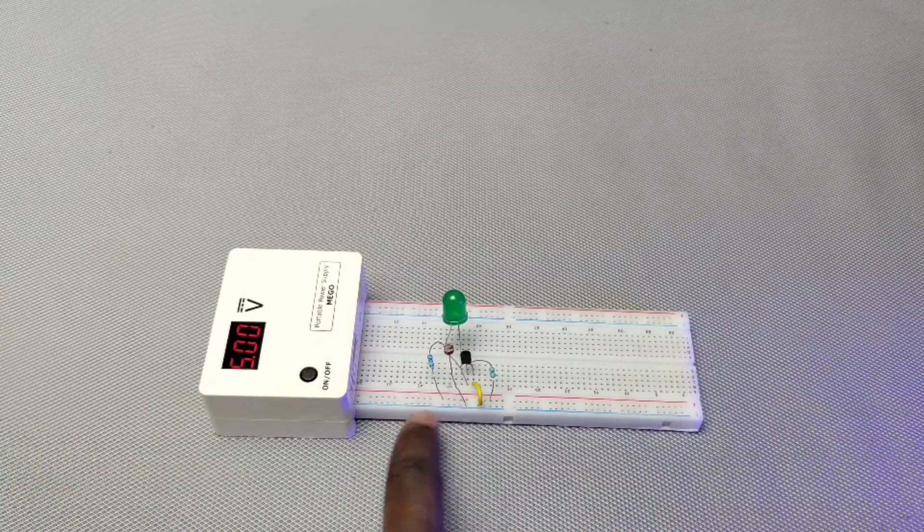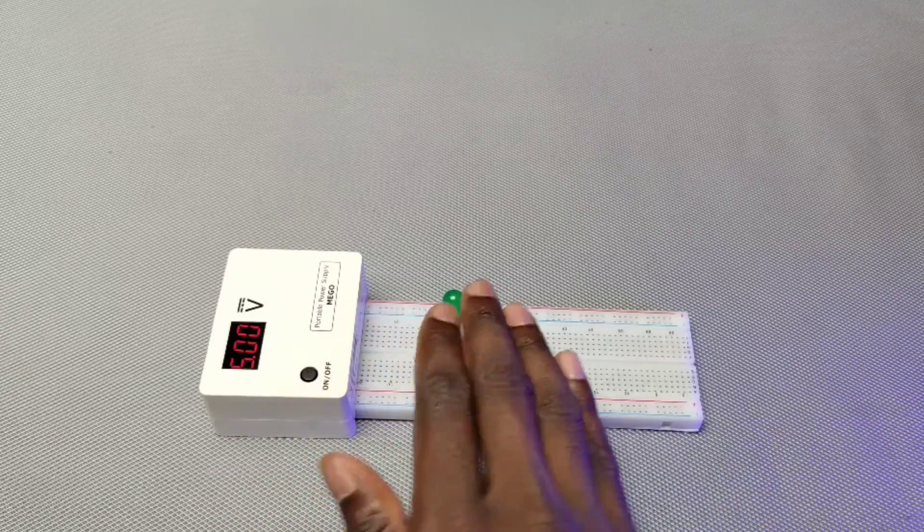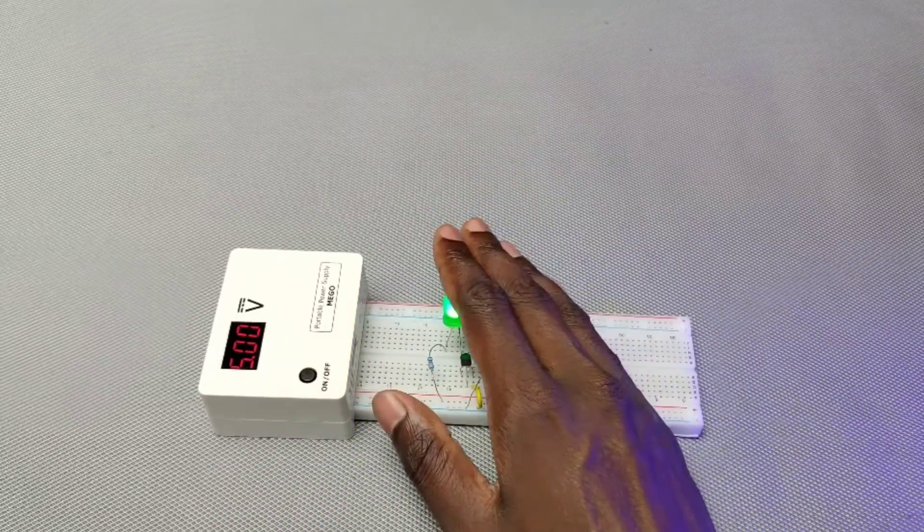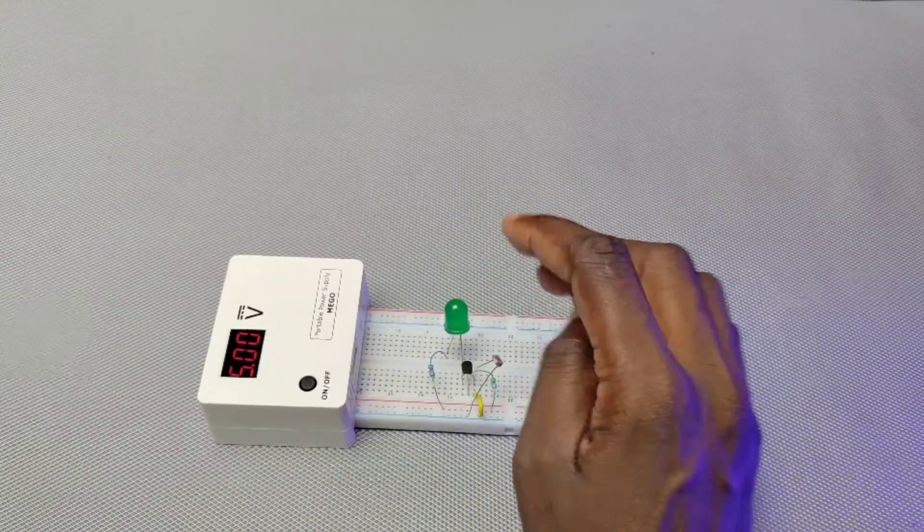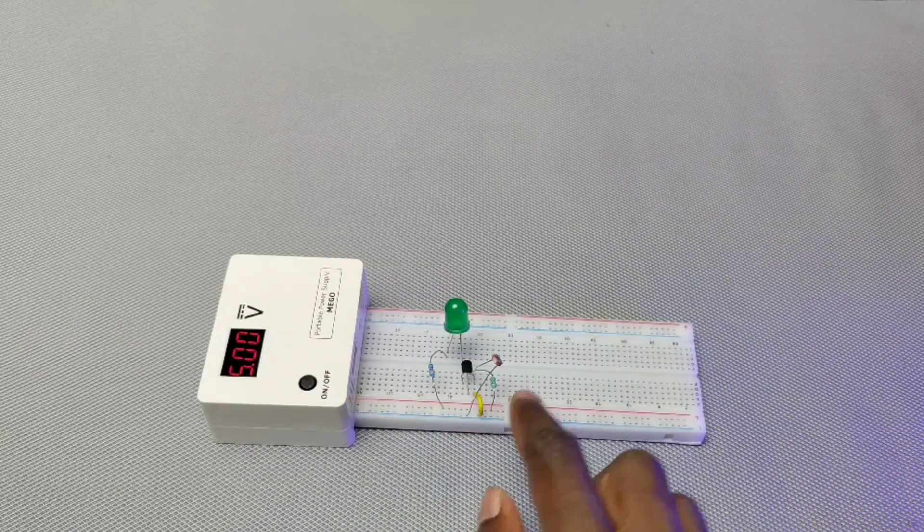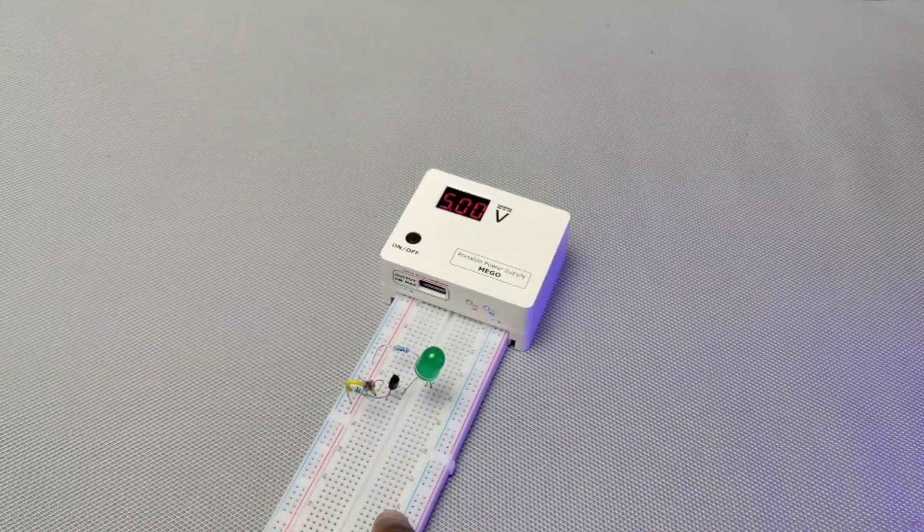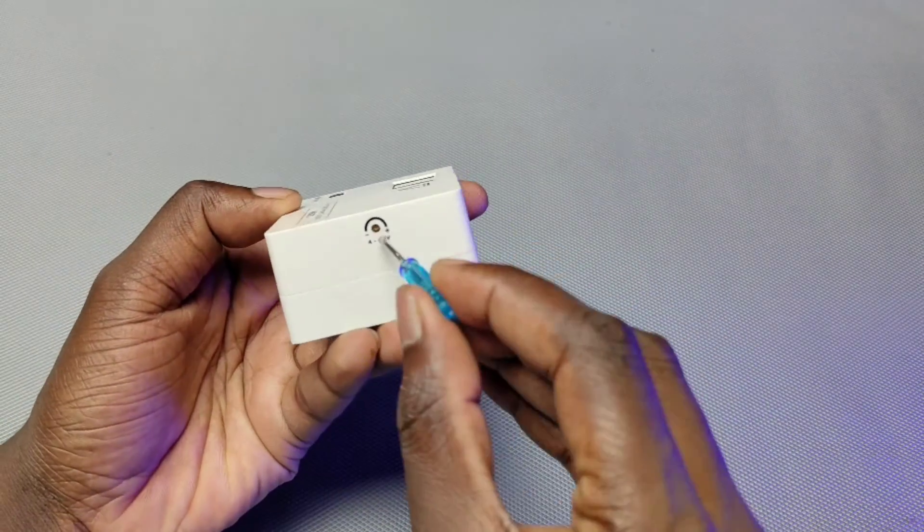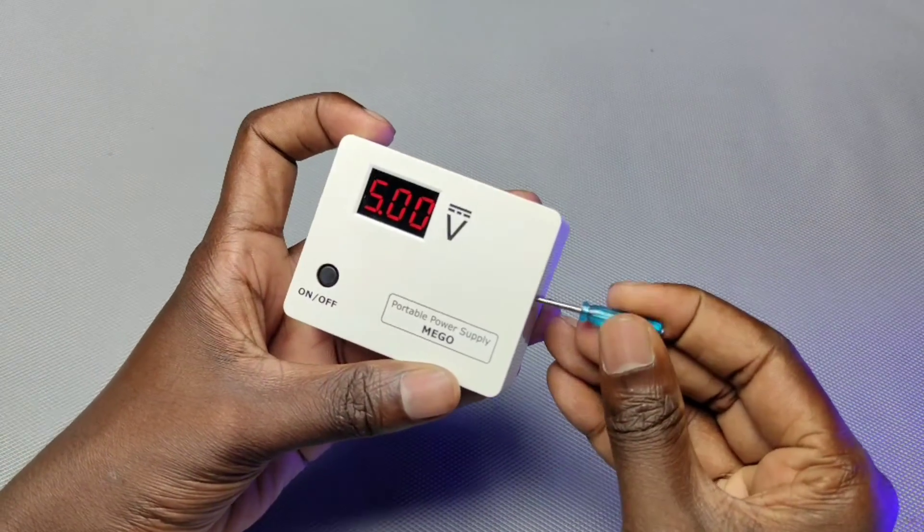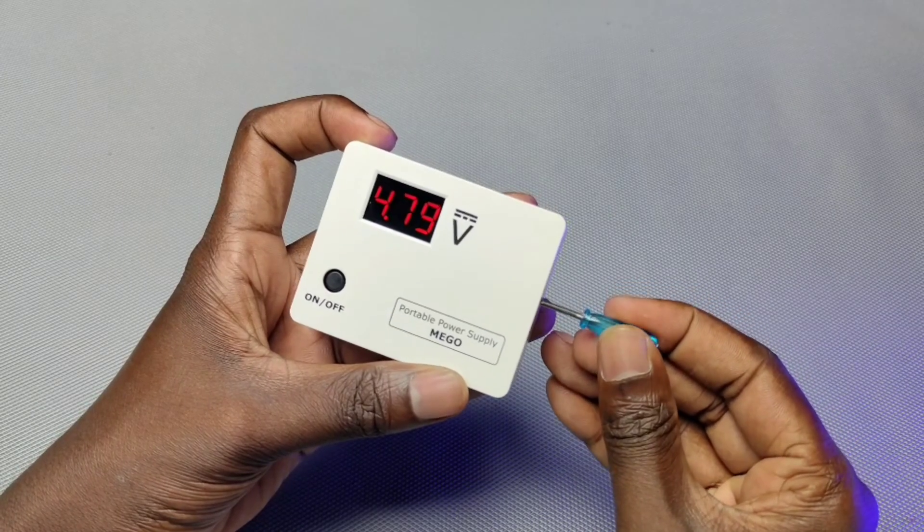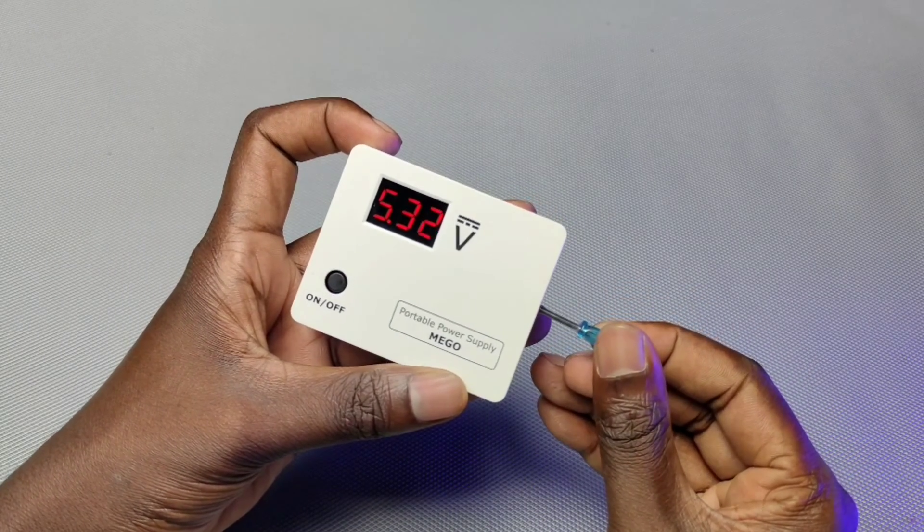Now you can see the working of this small circuit. This is a dark sensor circuit. We can adjust the output voltage using the screwdriver and the maximum output voltage is about 13 volt.